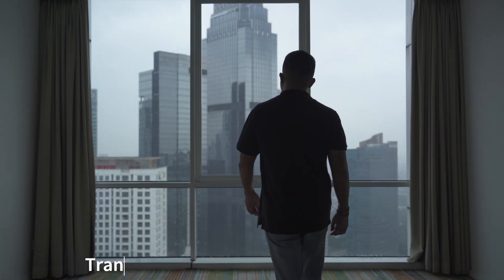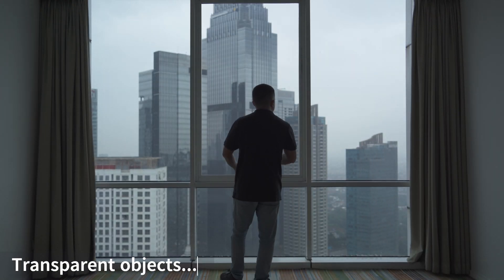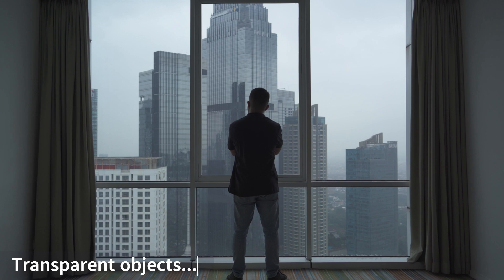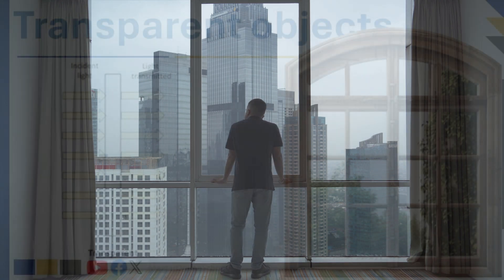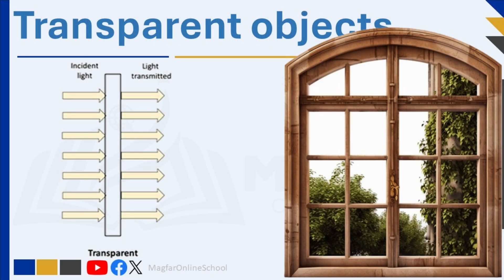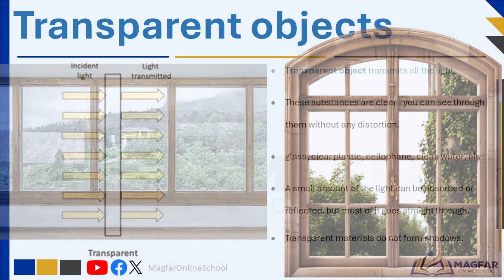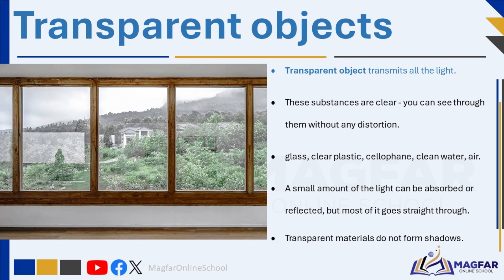Light passes through transparent substances such as glass, clear plastic, cellophane, and clean water. These substances are clear, meaning you can see through them without any distortion. Air is also transparent. Transparent objects transmit all the light — a small amount may be absorbed or reflected, but most goes straight through.